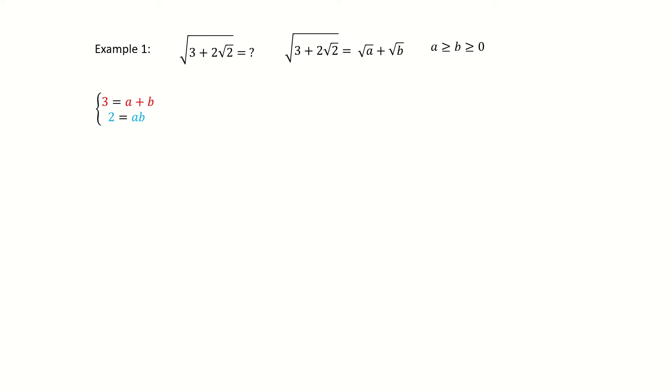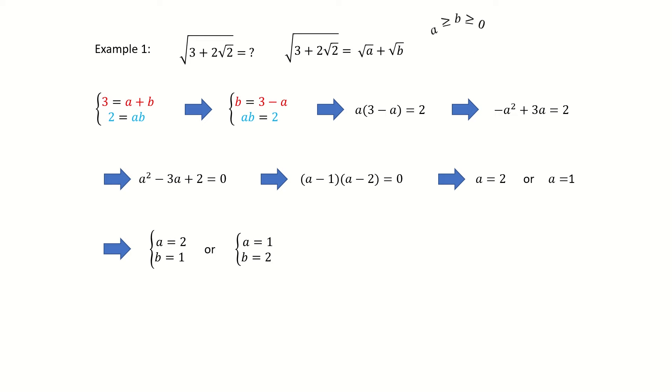Follow the previous slide. We plug in the equation to eliminate b. Then, we got a quadratic equation for a. We simplify and factor it. We got a is 2 or a is 1. So we got two solutions. But note that, in the very beginning, we require a is greater or equal to b. So we drop the second solution. Then we got the denested result. It equals to square root 2 plus square root 1.